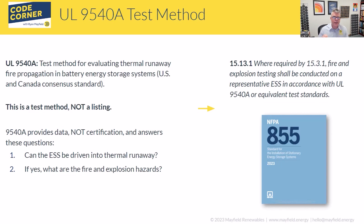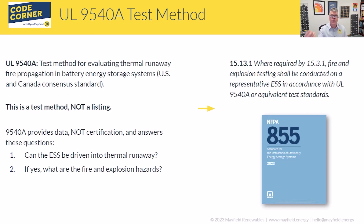UL 9540A is the other part to discuss. First, note that this is a test method — it's included as part of the listing in the second edition, but it's a test method. You're not going to see a '9540A listed' system; what you'll see is UL 9540A documentation with the test data. That data helps you understand what happens if and when this system goes into thermal runaway. The big thing with 9540A is that they drive the system into thermal runaway — they're trying to catch it on fire — and then measure what happens when it does.